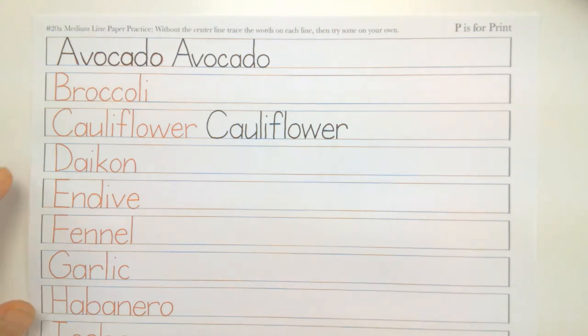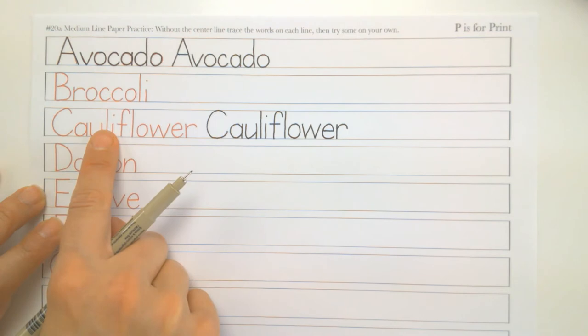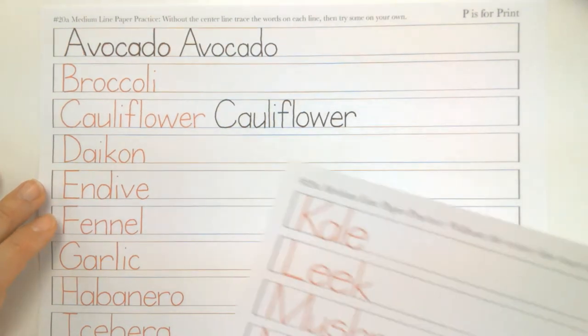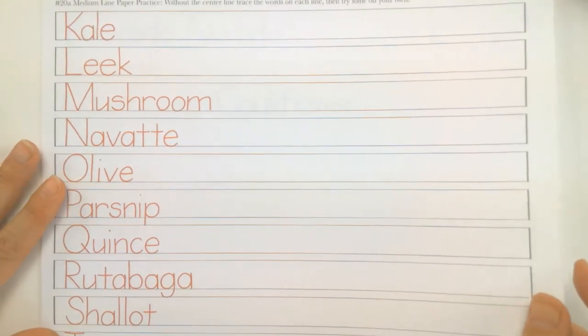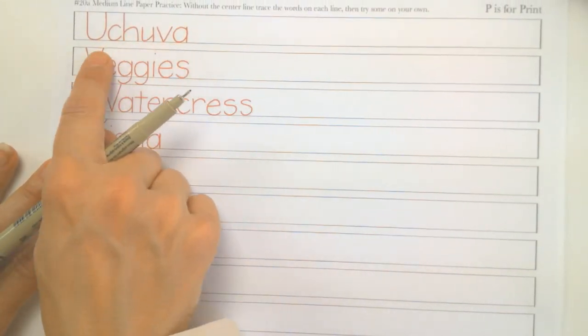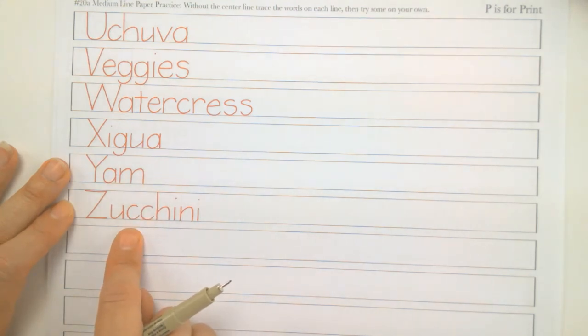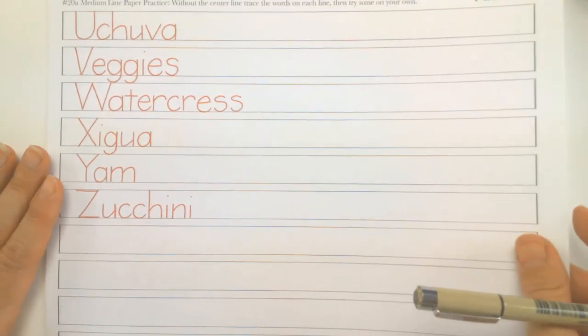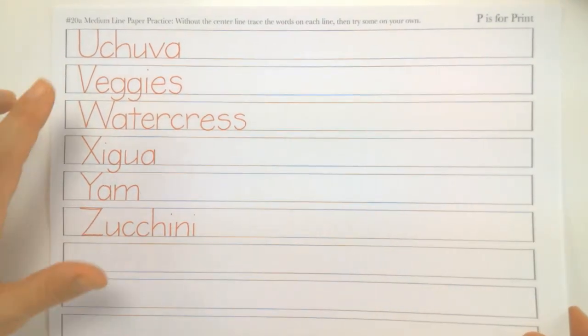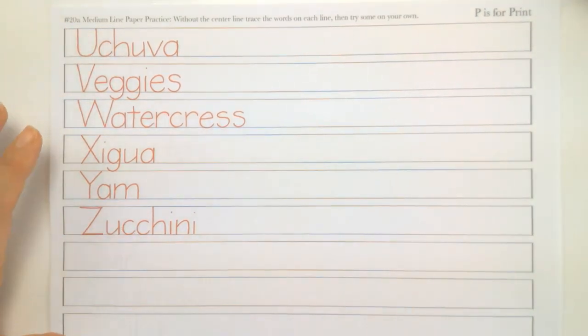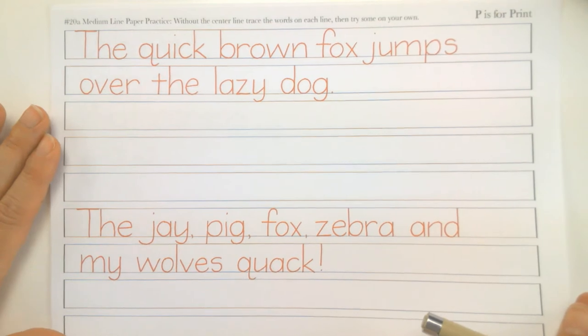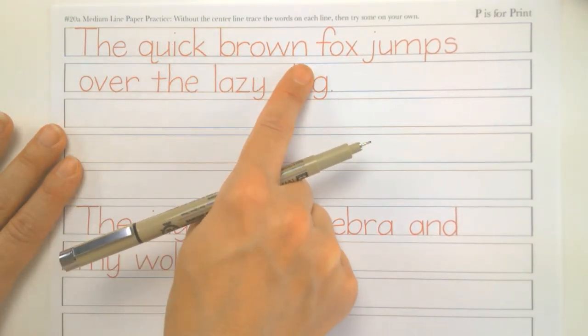So this is definitely going to take you a while to do medium line practice A. I gave you plenty to choose from. I have all the vegetables. So this goes through J. We have K. Kale through turnip. And the third page is yuchiva. I've never had that. And zucchini. So you can continue to practice without that center line. This is definitely reaching a whole new level of hardness. Okay. So that's just 20A. Now 20B is the small. One more thing. To get more. So this is why it's going to take you a few days. I gave you words spacing too. So we have the quick brown fox jumps over the lazy dog. So you can practice writing words.